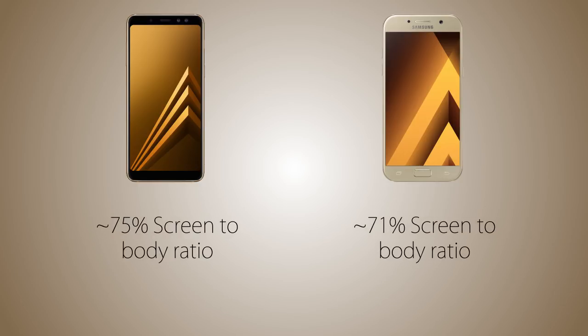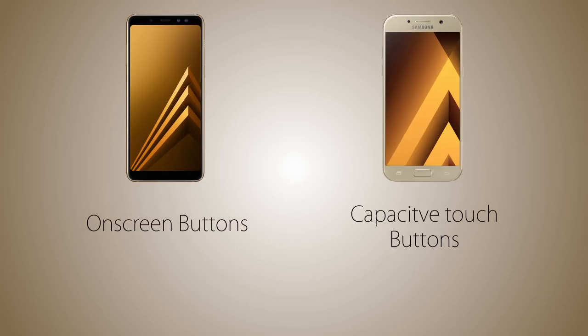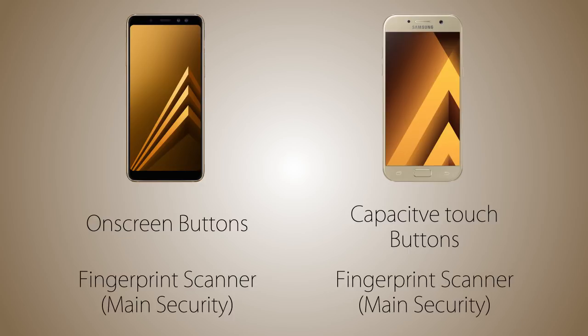The A8 is coming with 75% screen-to-body ratio versus 71% on the A5 2017, so significantly thinner bezels on the A8 2018. The A5 has capacitive touch buttons versus on-screen buttons on the A8 2018, and the fingerprint scanner is going to be at the back on both handsets.